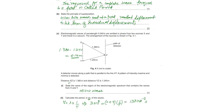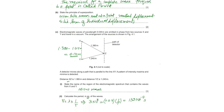This is the electromagnetic wave having the wavelength of 0.04 meter. A detector moves along a path that is parallel to the line XY. A pattern of intensity maxima and minima is detected. Distance XZ is 1.380 and YZ is 1.240.